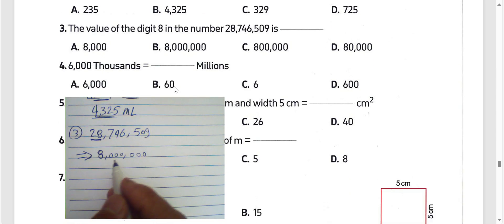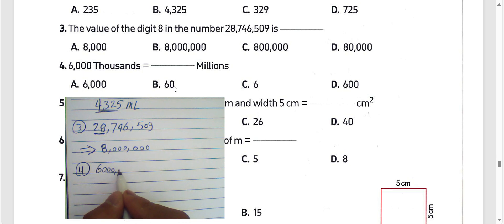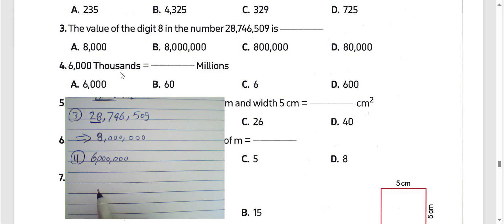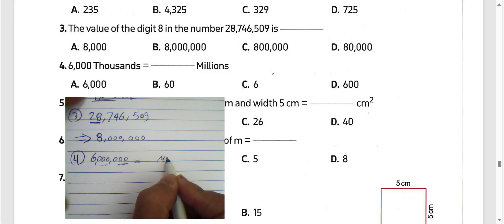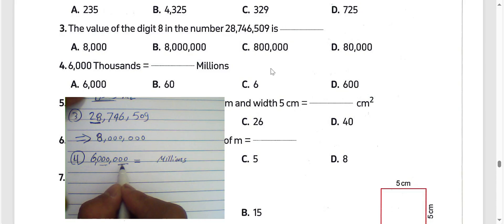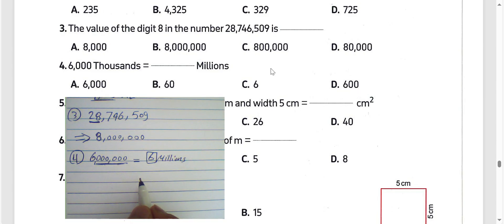Next, question number 4. We have 6,000,000. To reduce by dividing by 1,000, it will be 6,000. Convert to thousands by dividing by 1,000 — the result will be 6,000. So write 6 in the space. Choose letter C.